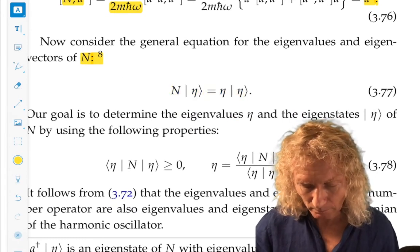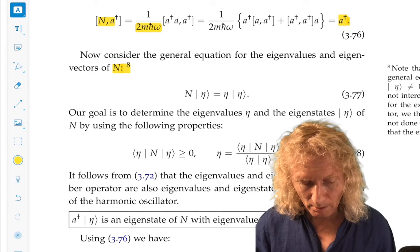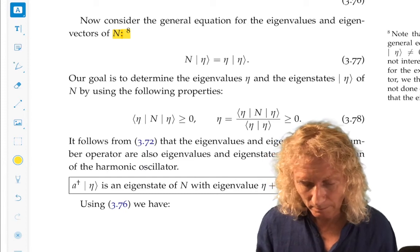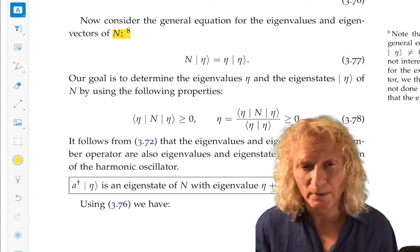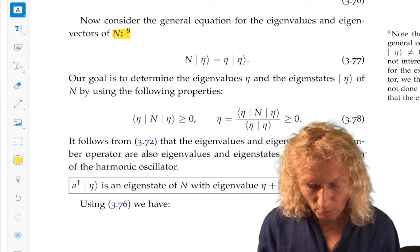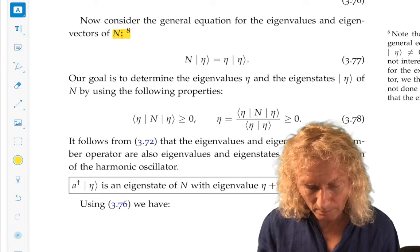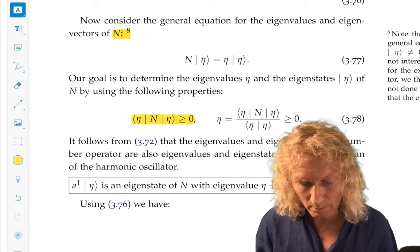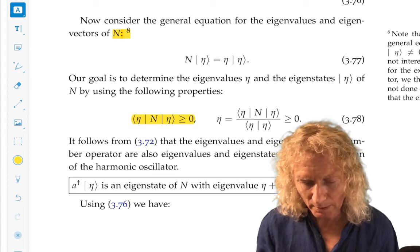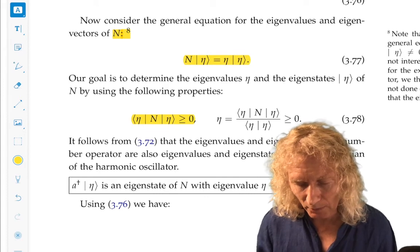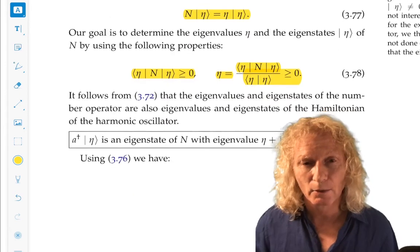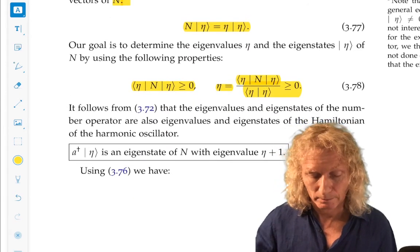Okay. Now so our goal is to determine the eigenvalues and the eigenvectors, or eigenstates, eta. Eigenvalues eta and eigenstates ket eta. And so we're going to use this property. The positivity property. And if you go to this, use that together with this, you easily get the fact that the eta, the eigenvalue, is greater than or equal to zero.